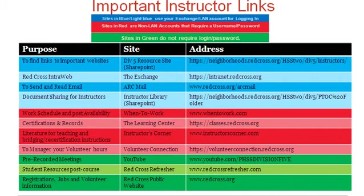The next LAN account site is our internal company site, or intranet, called the Exchange. This is where volunteers can find more information about the different departments of the Red Cross, Red Cross history, policy and procedure handbooks, nationwide announcements, as well as video tutorials. ArcMail is our official Red Cross email account site, which you can use to send and receive emails. The Instructor Library is another LAN account site that contains locally managed archives of job aids, meeting notes, flyers, procedure lists, and quick reference documents.